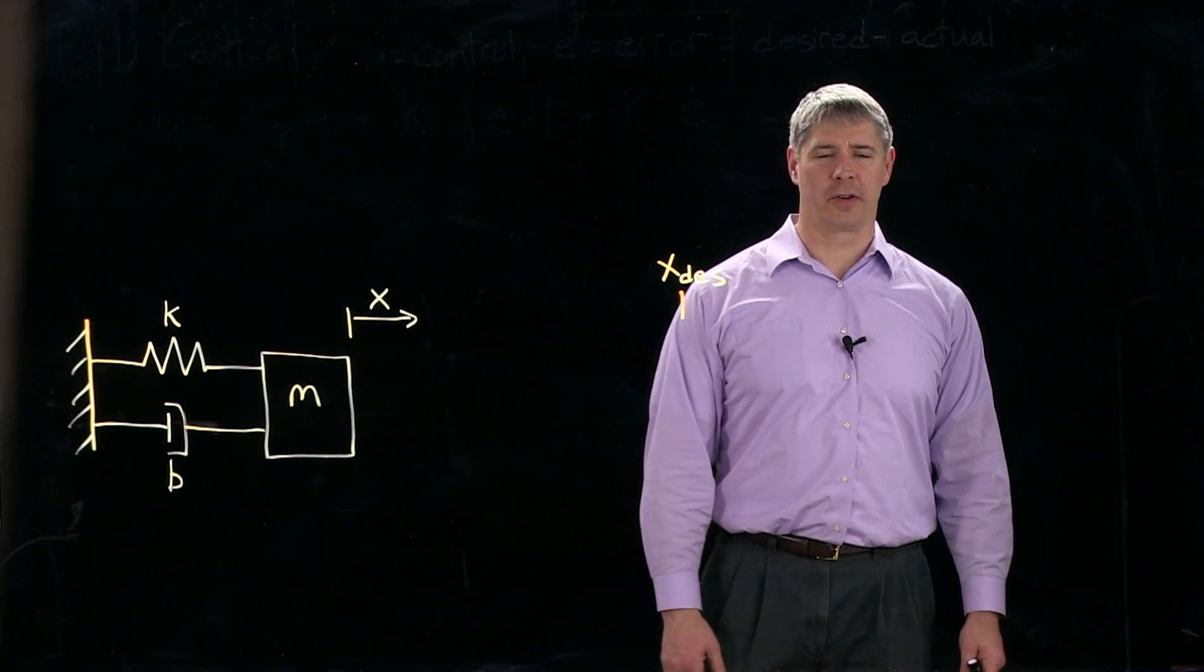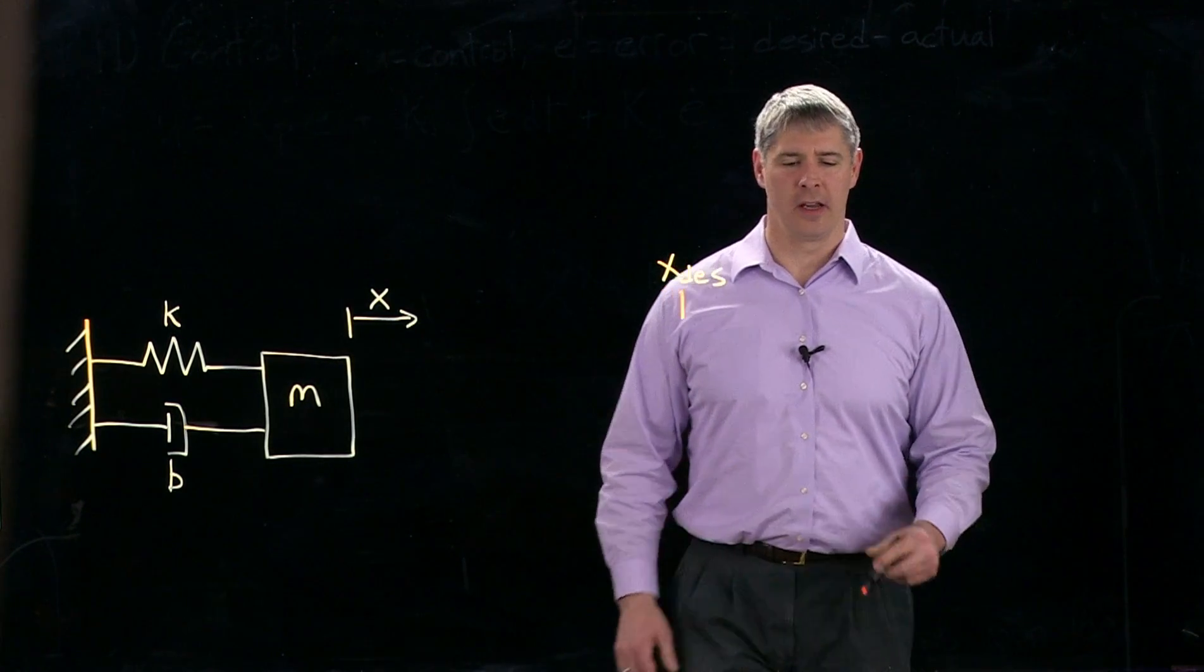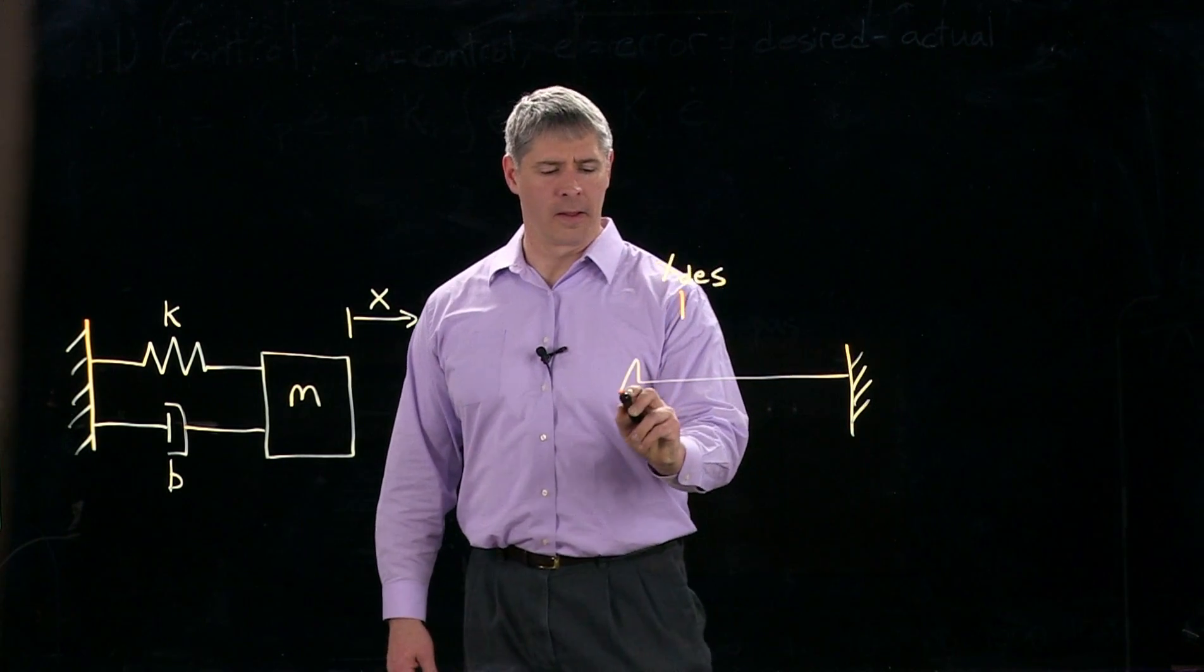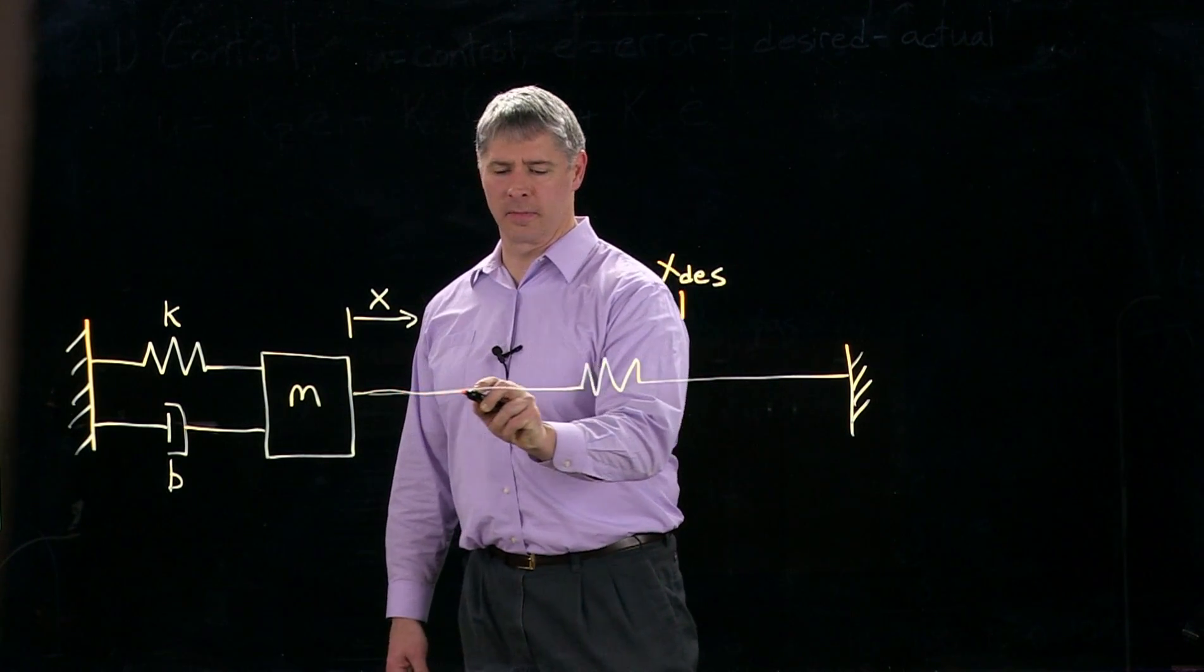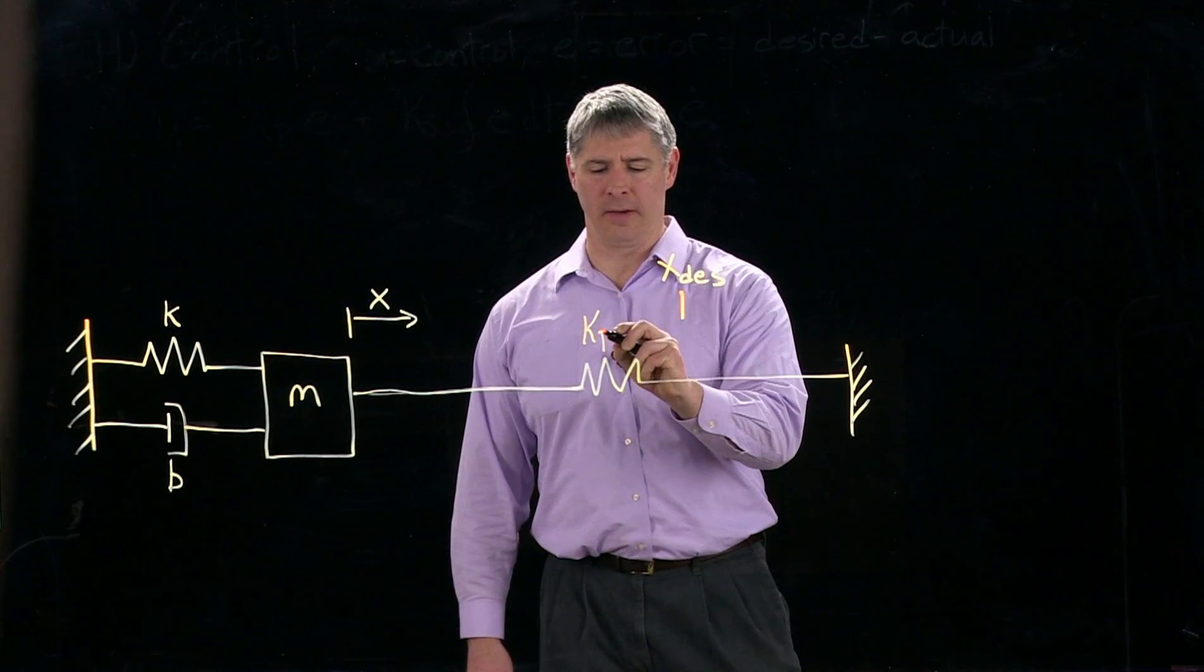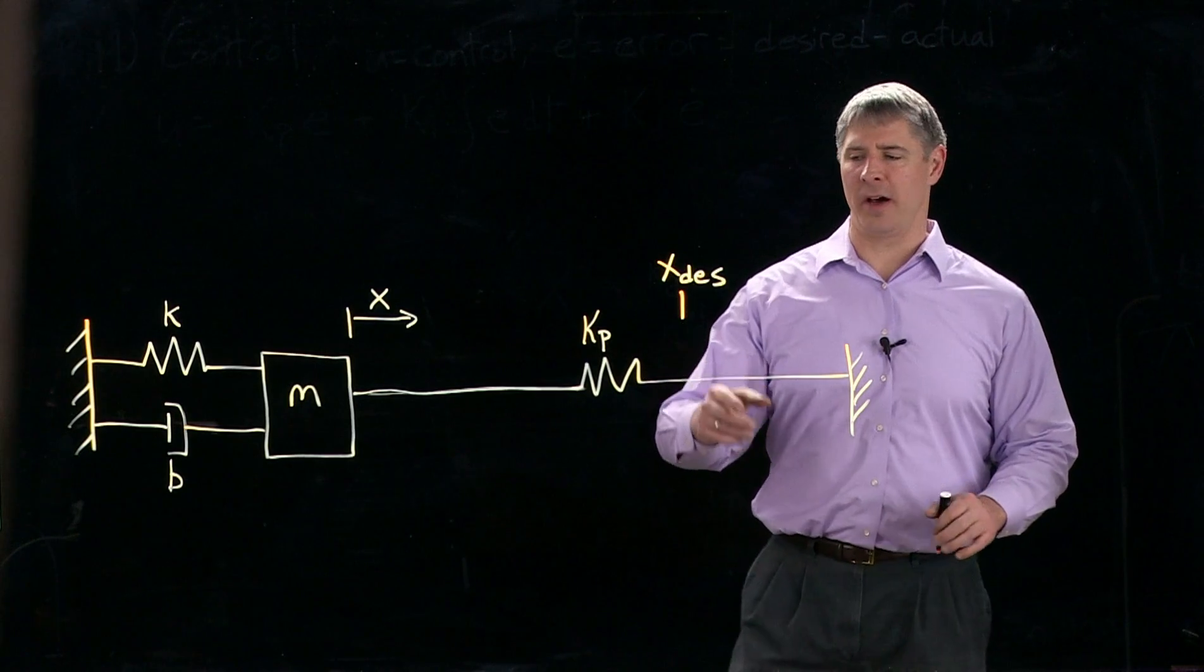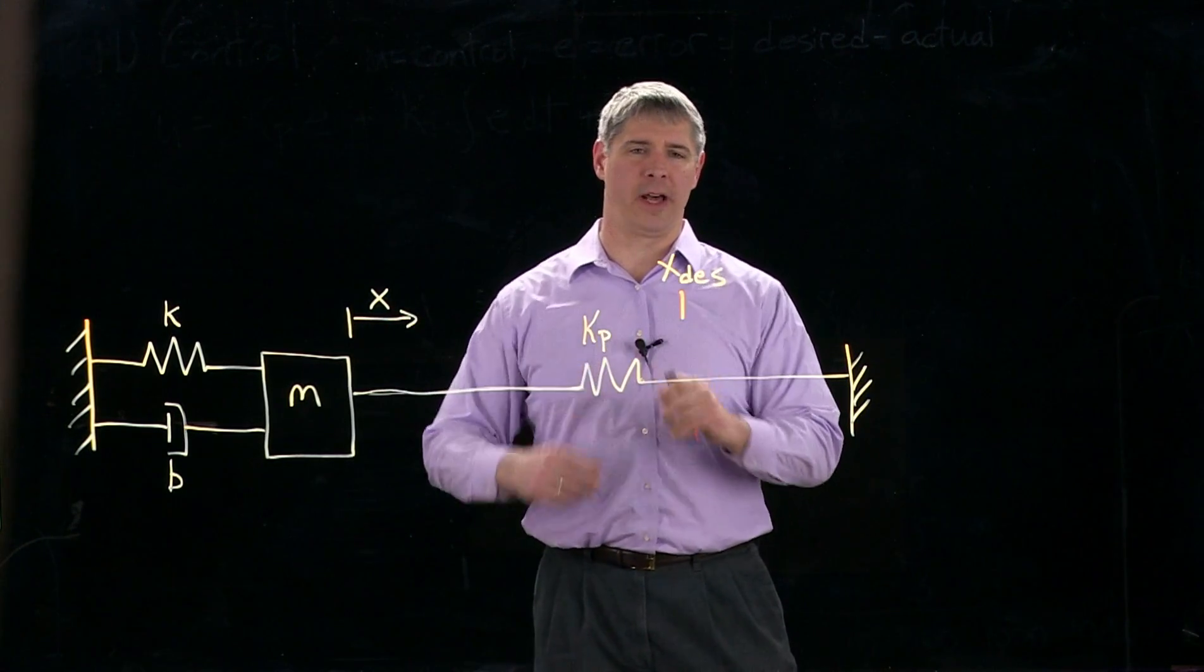So what a PID controller would do, let's look at the proportional term first. It attaches a virtual spring. So let me draw a virtual ground over here. And imagine now I attach a spring to the mass. And that spring constant is K sub P. And the rest length of this K sub P puts the end at X desired. So now whatever this displacement is, we're going to take that displacement, multiply it by K sub P.